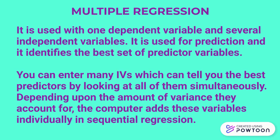The second test is multiple regression. Multiple regression is used with one dependent variable and several independent variables. It is used for prediction and it identifies the best set of predictor variables. In multiple regression, you can enter many independent variables which can tell you the best predictors by looking at all of them simultaneously. Depending upon the amount of variance they account for, the computer adds these variables individually in sequential regression.